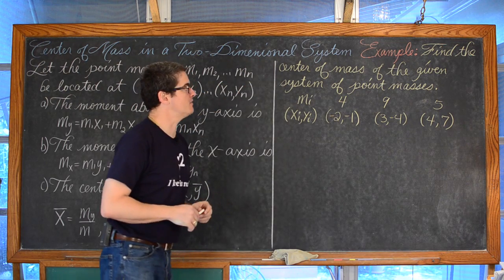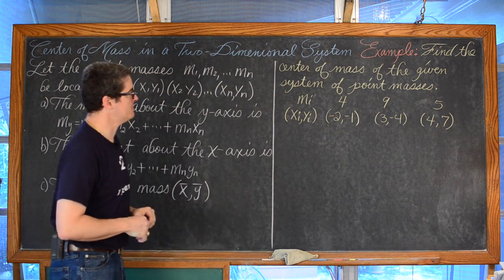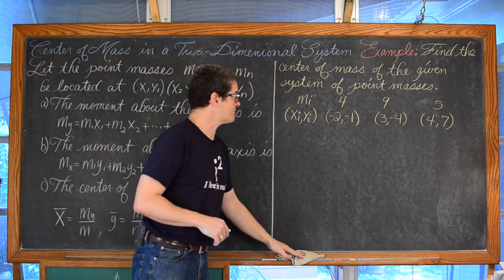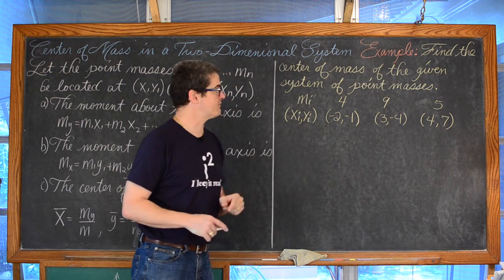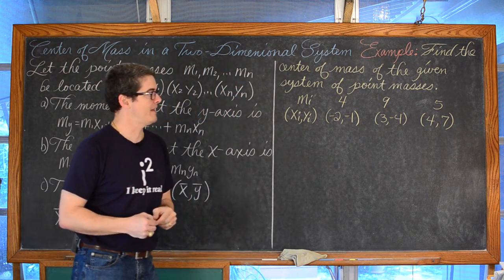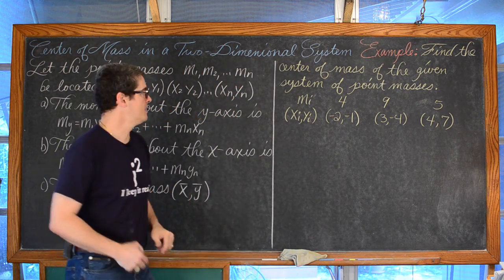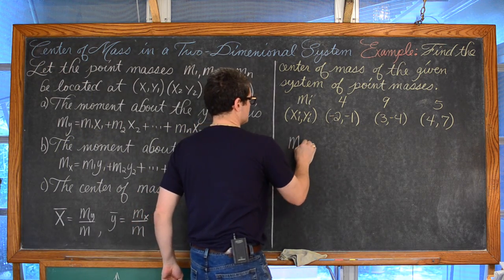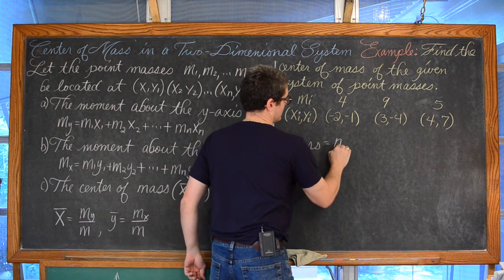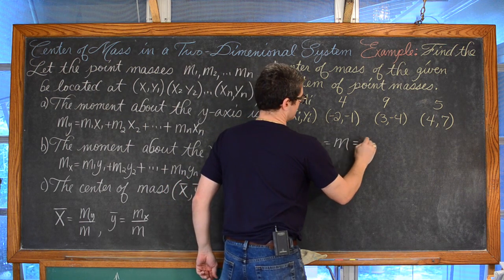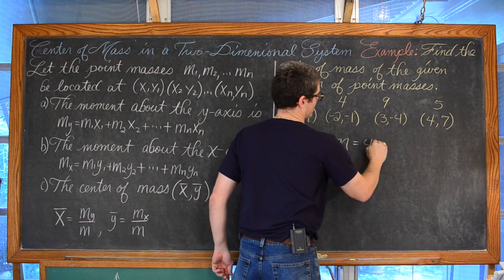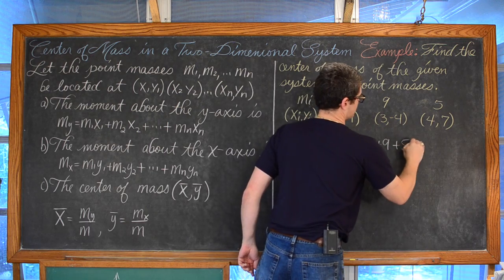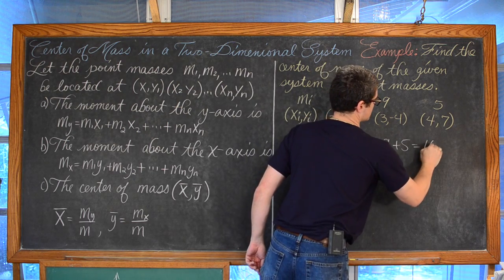Example 2: Find the center of mass of the given system of point masses. Our three masses are 4, 9, and 5. The total mass of this system is m = 4 + 9 + 5 = 18.